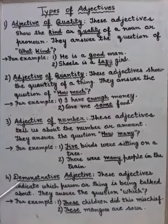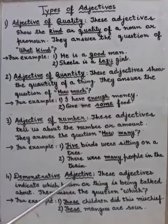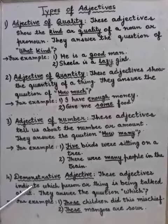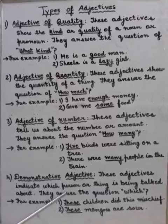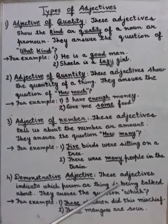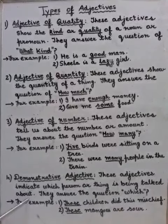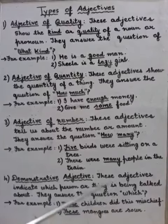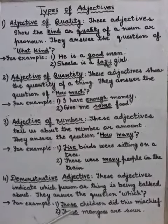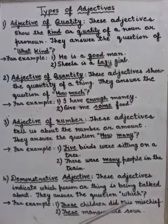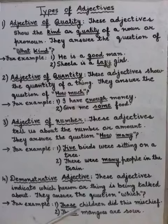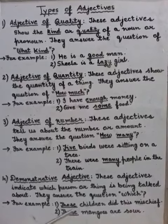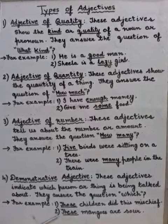4. Demonstrative adjective. These adjectives indicate which person or thing is being talked about. They answer the question which? For example, those children did this mischief. Which children did mischief? Those.